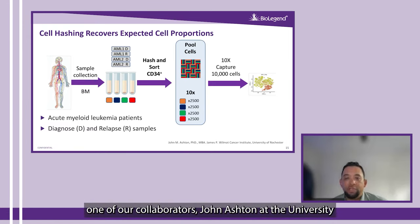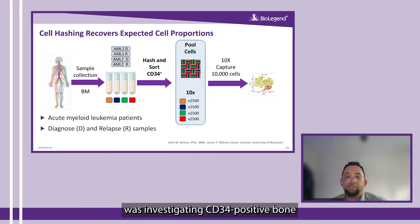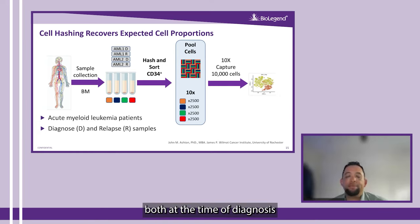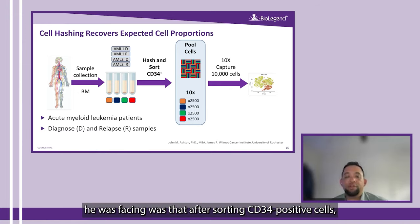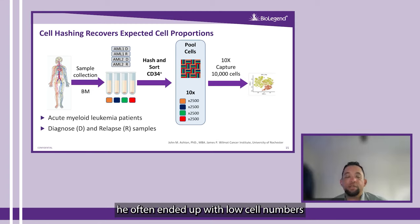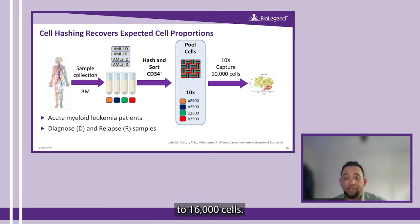Early on, one of our collaborators, John Ashton at the University of Rochester, helped us to validate this. John's research focus was investigating CD34-positive bone marrow cells from biopsies of acute myeloid leukemia patients, both at the time of diagnosis and at relapse after treatment. The issue he was facing was that after sorting of CD34-positive cells, he often ended up with low cell numbers ranging from 1,000 to 3,000 cells, which is far less than what you can load per channel of a 10X chip, which is typically around 10,000 to 16,000 cells.